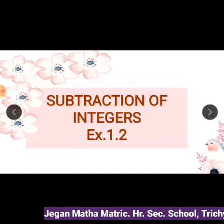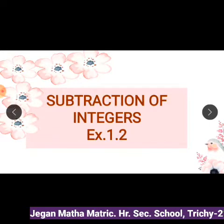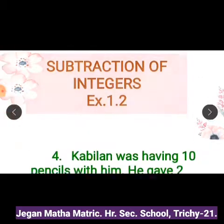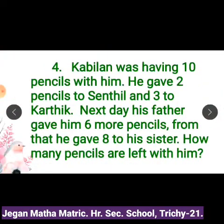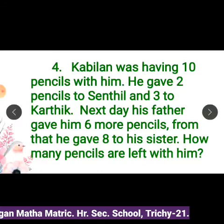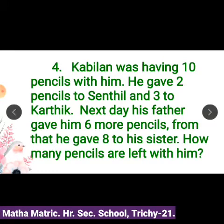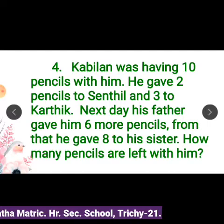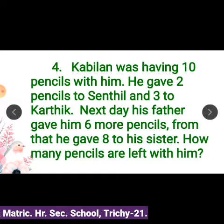Next, I am going to explain some statement sums given in exercise on point 2. 4th sum: Kabilan was having 10 pencils with him. He gave 2 pencils to Sendhil and 3 to Karthik. Next day, his father gave him 6 more pencils. From that, he gave 8 to his sister. How many pencils are left with him?